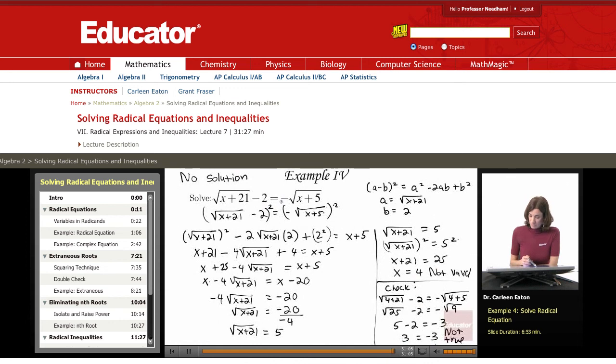Had that negative not been there, this would have been, we could have come up with a valid solution. But with that negative in the original, the solution was not valid. Therefore, there is no solution to this radical equation. That concludes this lesson on radical equations and inequalities. Thanks for visiting educator.com.